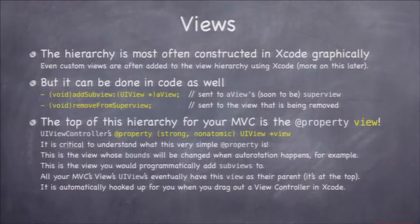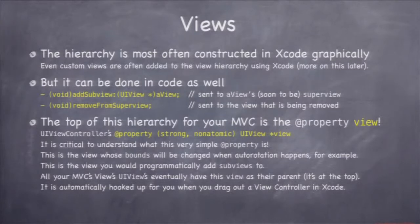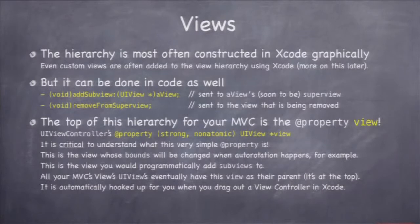Your MVCs have a view, and that top-level view that contains all the views in the view hierarchy for your MVC is the property 'view' in the view controller. If you look in UIViewController, there's a property called 'view' — it's a UIView. If you go in Xcode and right-click on your controller or on the background of your MVC's view, you'll see an outlet. This view property points to that top-level view, and it's a good place to start if you want to add views in code to your view hierarchy.